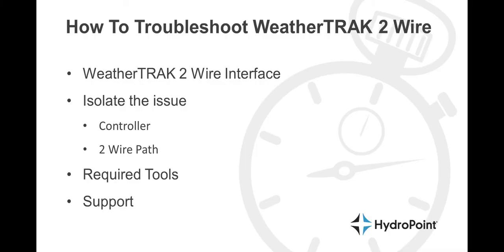In a nutshell, that's how to troubleshoot WeatherTrack 2-Wire. First, isolate the issue — make sure it's a problem with the 2-Wire path and not a WeatherTrack issue. Then isolate the issue on the hardware by separating the controller from the 2-Wire path. Then use the required tools to troubleshoot the 2-Wire path and find the short in the field.